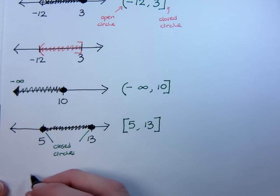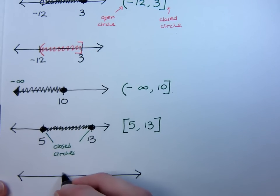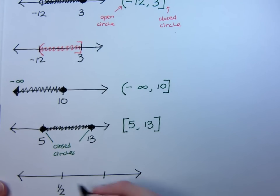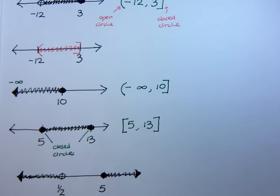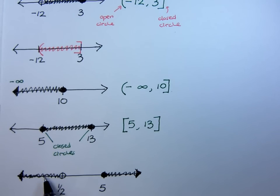All right, let's try one last problem here. Suppose I have 1 half here, and I have 5 here. I'm including everything that's to the left of 1 half, and I'm including everything that's to the right of 5.